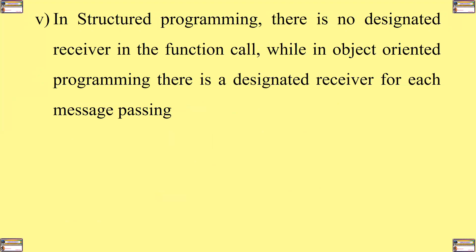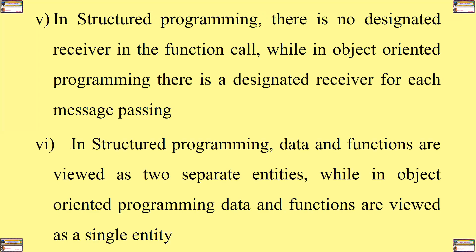Number five, in structured programming, there is no designated receiver in the function call, while in object-oriented programming, there is a designated receiver for each message passed. Number six, in structured programming, data and functions are viewed as two separate entities, while in object-oriented programming, data and functions are viewed as a single entity.